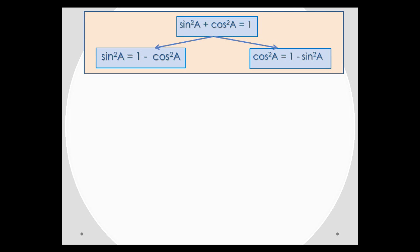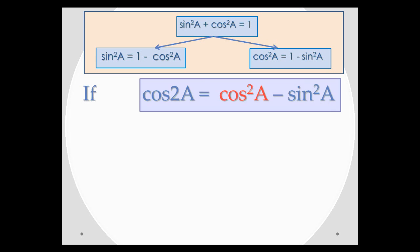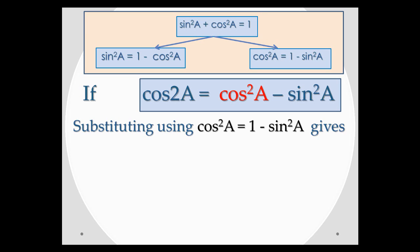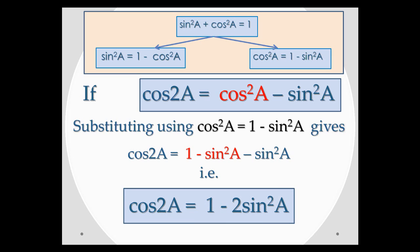If we make use of these substitutions, we can derive the rest of the double angle formulae. We found that cos 2a equals cos squared a minus sine squared a. If we replace cos squared a with 1 minus sine squared a — replacing what's shaded in red with the red substitution — we find that cos 2a is equal to 1 minus 2 sine squared a.